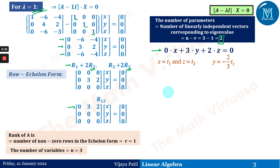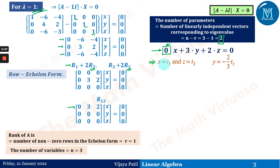With two parameters, we assume values for two of the three variables. Because the coefficient of x is 0 in our equation, we must assume x = t1 and z = t2. From the equation we then get y = −(2/3)t2.